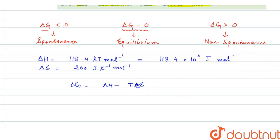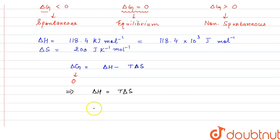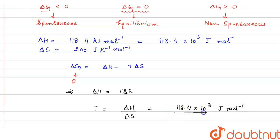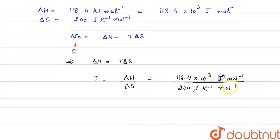First, we calculate the temperature at which the reaction is at equilibrium, i.e., when delta G is equal to 0. In that case, the equation becomes delta H equals T delta S. So delta H is 118.4 × 10³ joules per mole, and delta S is 200 joules per Kelvin per mole. Joule and per mole cancel out, giving the temperature in Kelvin, which comes out to be 592 Kelvin.